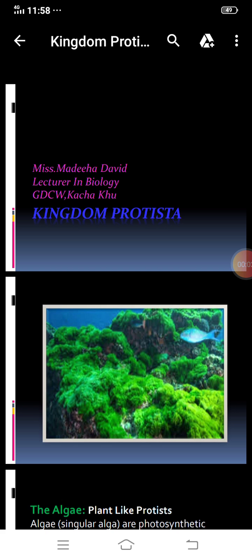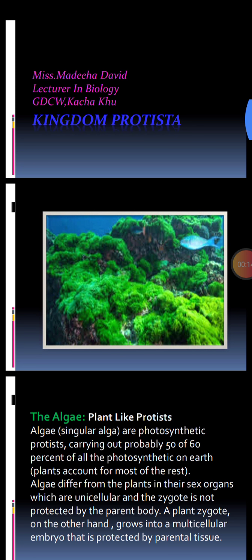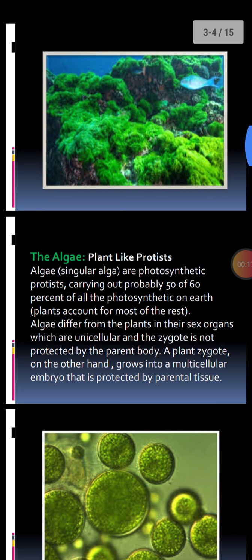In biology, Kingdom Protista, today we will learn about algae, which are plant-like protists. An image of algae is shown — they are green in color. Algae, singular alga, are photosynthetic protists, meaning they are able to carry out photosynthesis to prepare food, accounting for approximately 50 to 60 percent of all photosynthetic processes on Earth. Plants account for most of the rest.